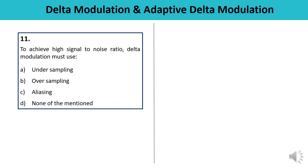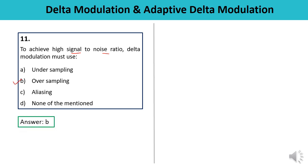Question 11: To achieve a high signal-to-noise ratio, Delta Modulation must use undersampling, oversampling, aliasing, or none of the above? To achieve a high signal-to-noise ratio, aliasing must be avoided. It means oversampling is required. Aliasing and undersampling are going to reduce the signal strength and deteriorate signal quality. So the answer is B — oversampling.